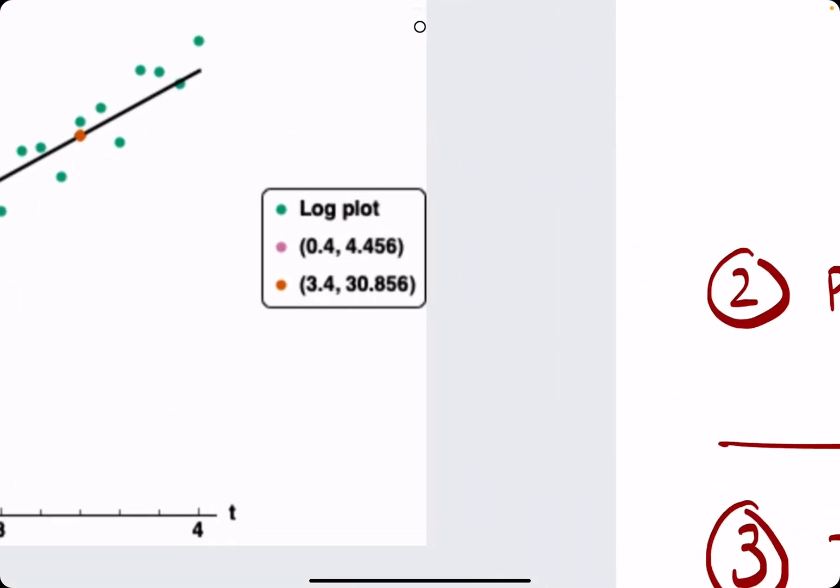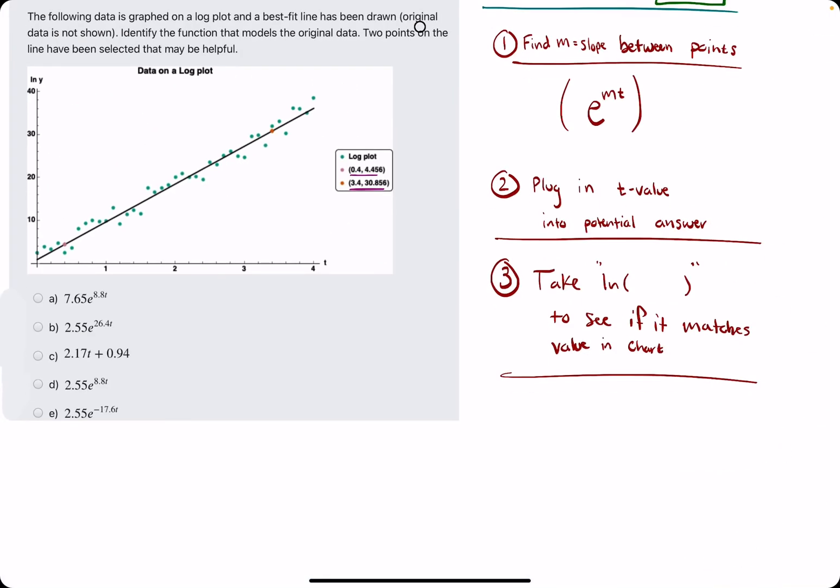So we are finding the slope between these two points given here. So the slope formula is the y value, 30.856, the y2 value, minus the y1 value, which is 4.456. And we are dividing that by the difference in the x values, 3.4, minus 0.4.